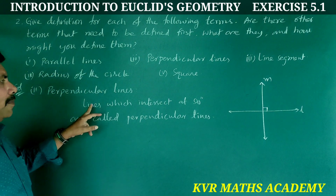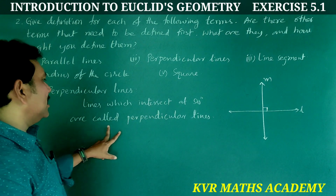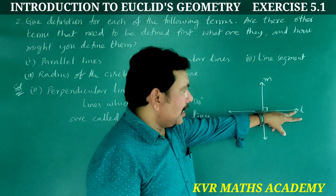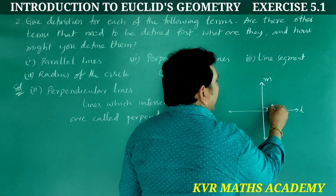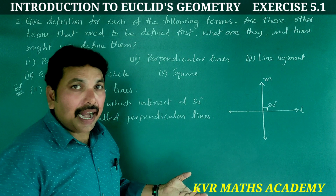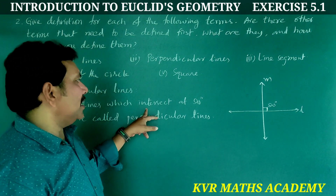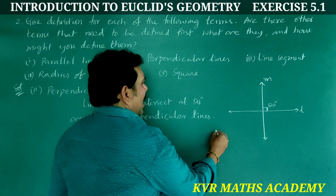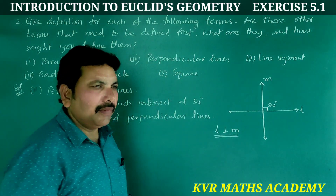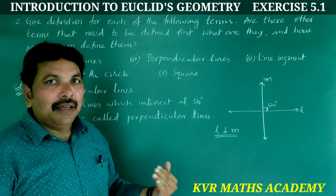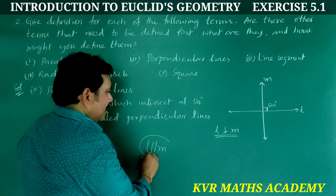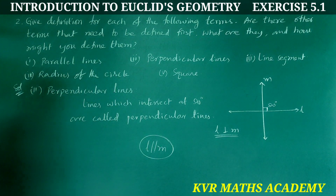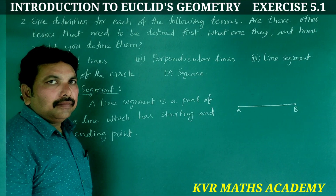Second term: perpendicular lines. Lines which intersect at 90 degrees are called perpendicular lines. For example, if L and M intersect at a right angle of 90 degrees, then L is perpendicular to M, written as L ⊥ M.